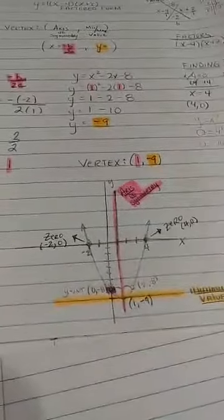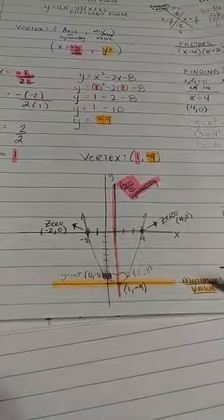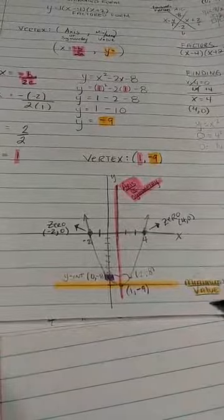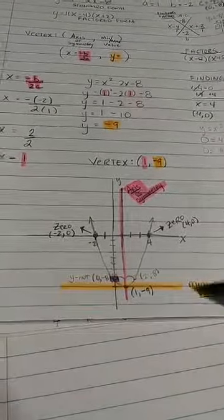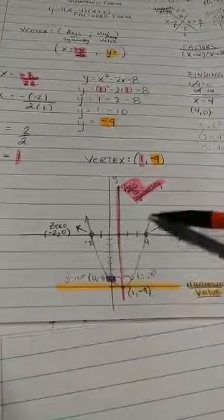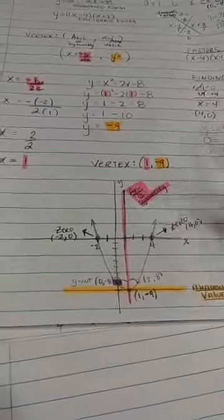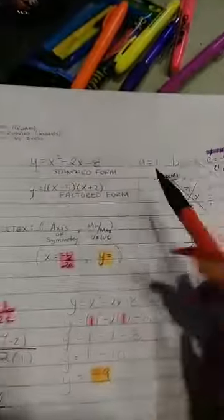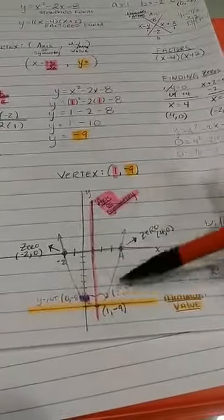We have the vertex here, 1, negative 9. And now we have another point, which is only 1 away from the axis of symmetry, just as 0, negative 8 is 1 away. So with that said, let's talk about something that will help us remember when we have a minimum versus a maximum. Well, you notice how the parabola is pointing up? Why do you think that is? A is positive. So when A is positive, my parabola points up.